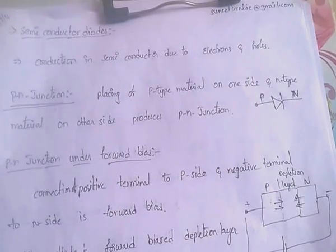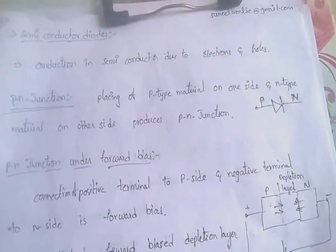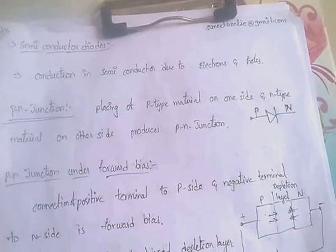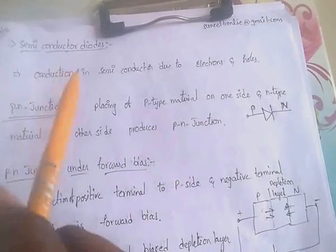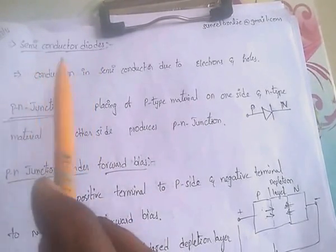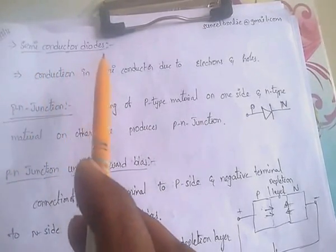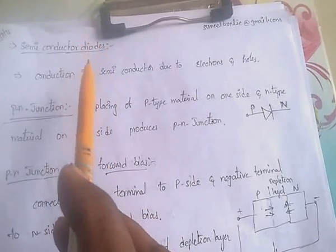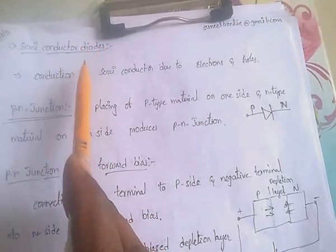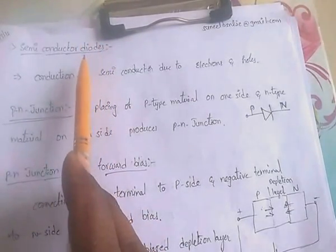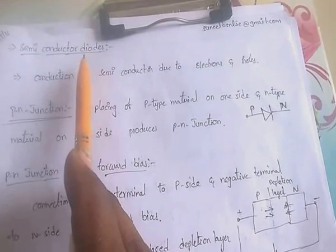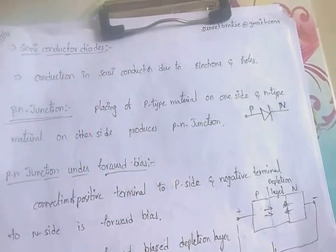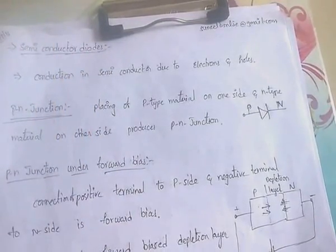Hi friends, in this video I am going to discuss Electronic Devices and Circuits Part 3: Semiconductor Diodes. What is meant by diode? As the name itself, 'di' means two. A diode is a two terminal device.